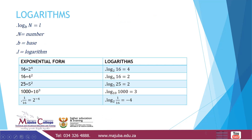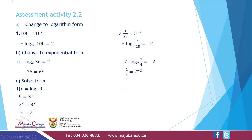Now let's go to logarithms. We have log base b of N equals L, where N is the number, b is the base, and L is the logarithm. For example: 16 equals 2 to the power 4 becomes log base 2 of 16 equals 4. And 25 equals 5 squared becomes log base 5 of 25 equals 2.